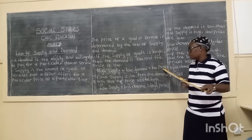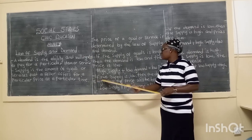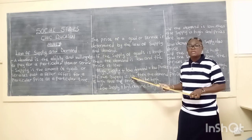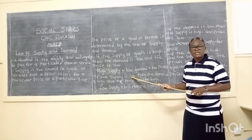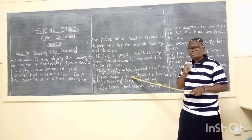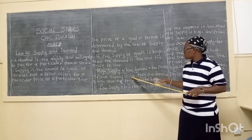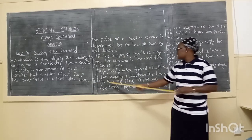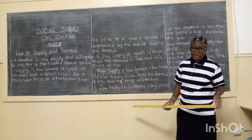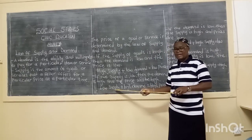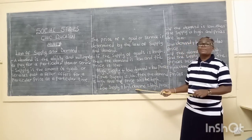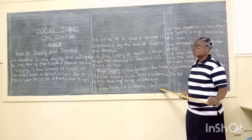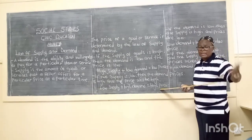Now let's look at the opposite. If the supply is low — there are few goods being sold on the market, maybe only two people in the entire market are selling tomatoes — what will happen? They will take advantage and raise the prices because the demand is high. So the equation is: low supply, few goods on the market, leads to high demand, and if there is high demand, the sellers will increase prices — so there will be high prices.